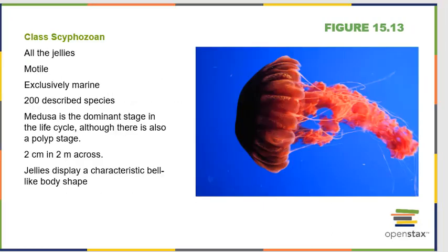The next class is Scyphozoa — these are all jellies. They're motile and exclusively marine, with about 200 described species. They tend to spend most of their lifetime in the medusa form of the body plan, though they do have a polyp stage. They can be anywhere from two centimeters to two meters across, showing a lot of variability in jellyfish, all with that very characteristic bell-like body shape.